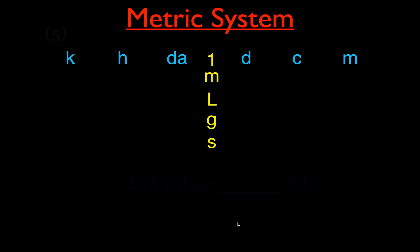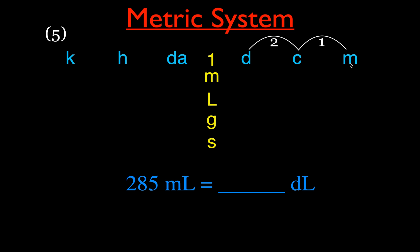Example 5: convert milliliters to deciliters. Remember, d here stands for deci, not deka. Milli is two steps to the right of deci on the chart, so we move two steps to the left, shifting the decimal two places left. 285 milliliters becomes 2.85 deciliters.